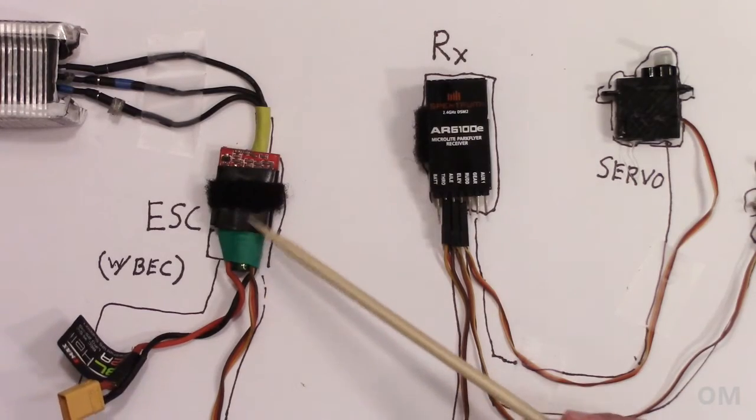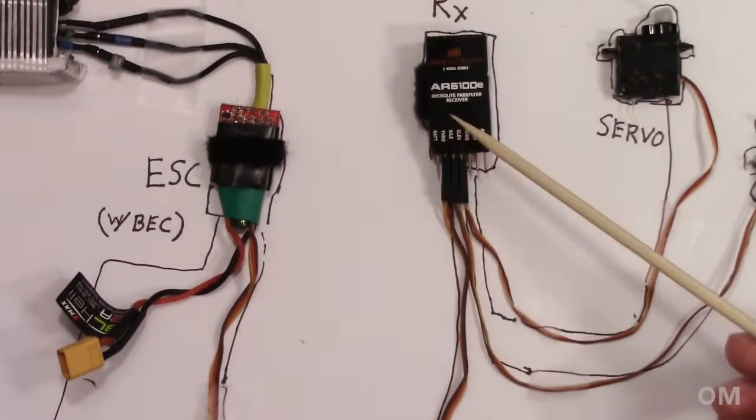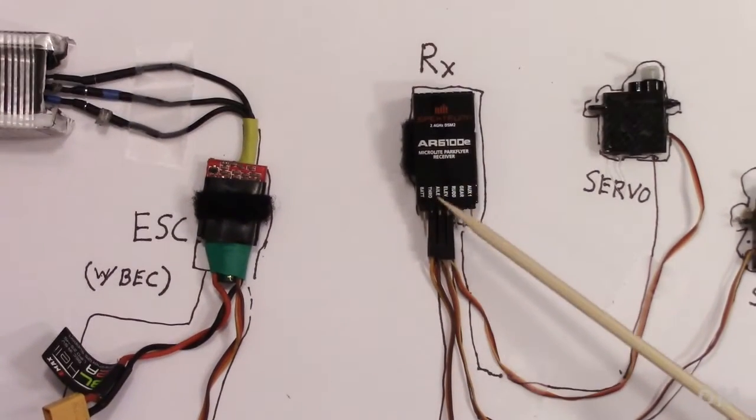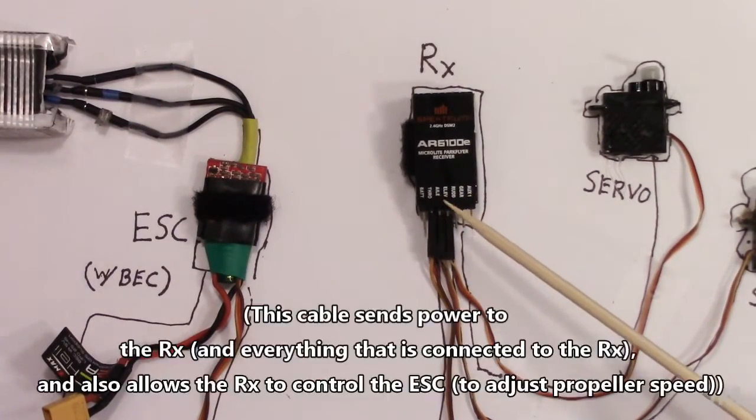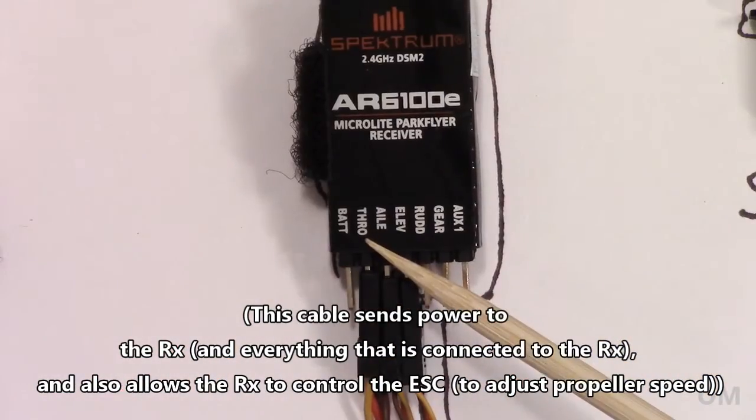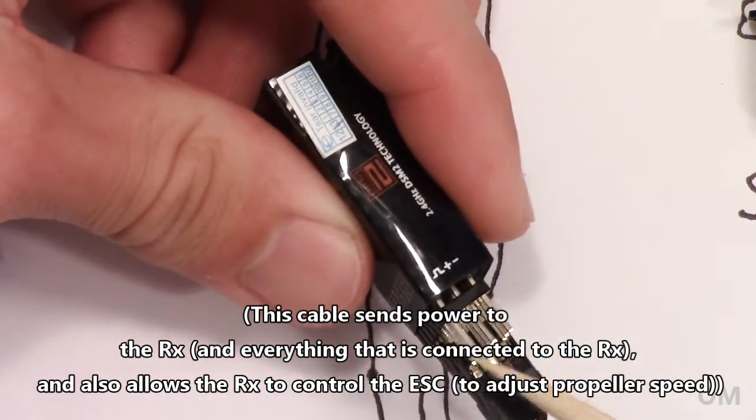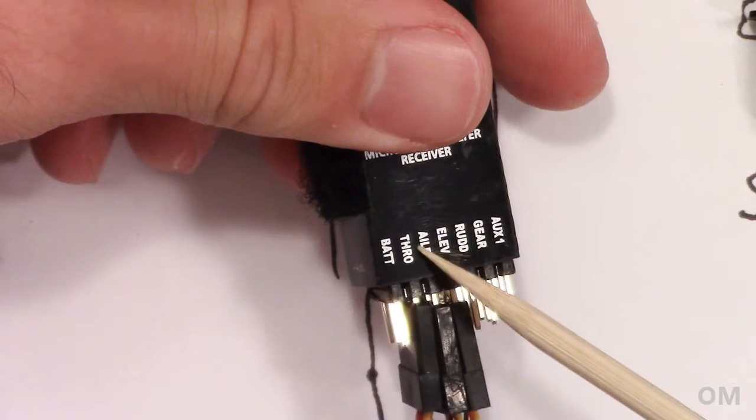This cable here that comes off of the ESC, this runs down here and it goes to the receiver. Now what this does is, let me see if I can zoom in on that for you, this goes, for this particular receiver, it goes in here to the throttle port. It just has these little pins here, these three little pins and it goes into the throttle port right there.